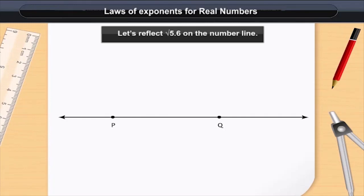Firstly, draw a line, mark it PQ such that PQ is equal to 5.6 units. Now, mark a point S such that QS is 1 unit.